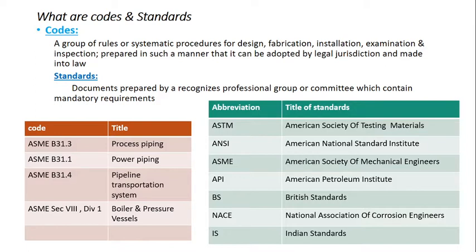A code is a group of rules — a systematic procedure for design, fabrication, installation, examination, and inspection. If you look at a code, you will see it covers design, fabrication, installation, and examination.